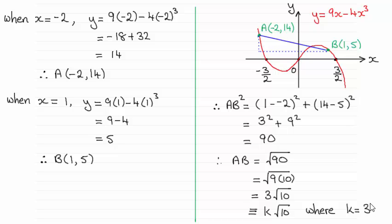To do this, what we need to do is, first of all, establish the y-coordinates of A and B, and then we can use the distance between two points using Pythagoras' theorem.